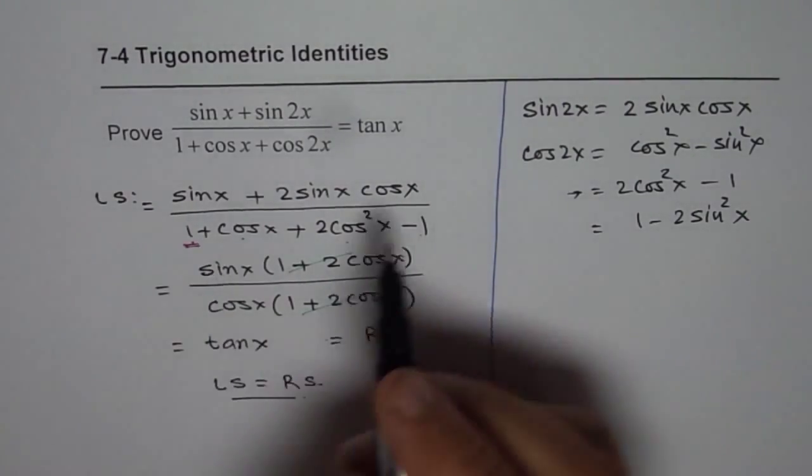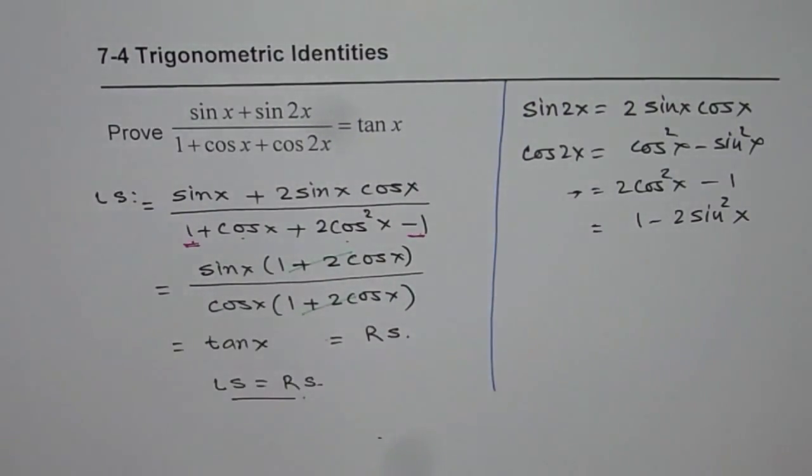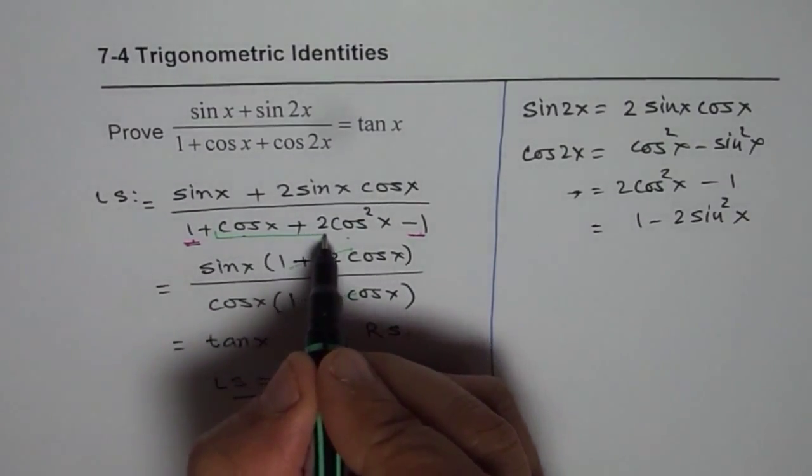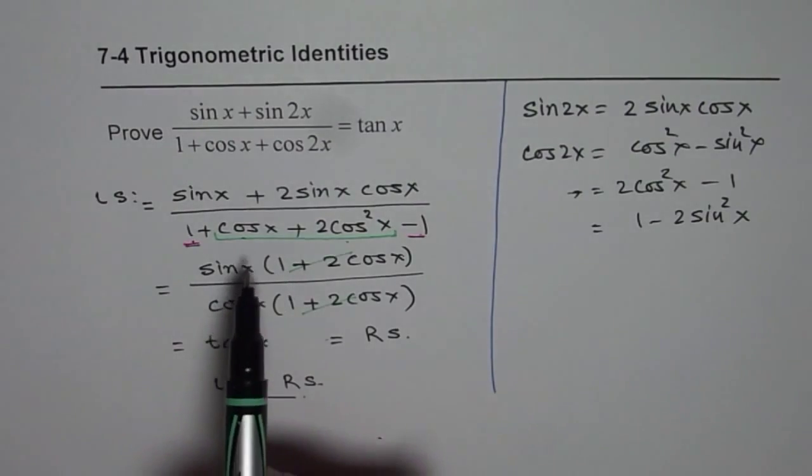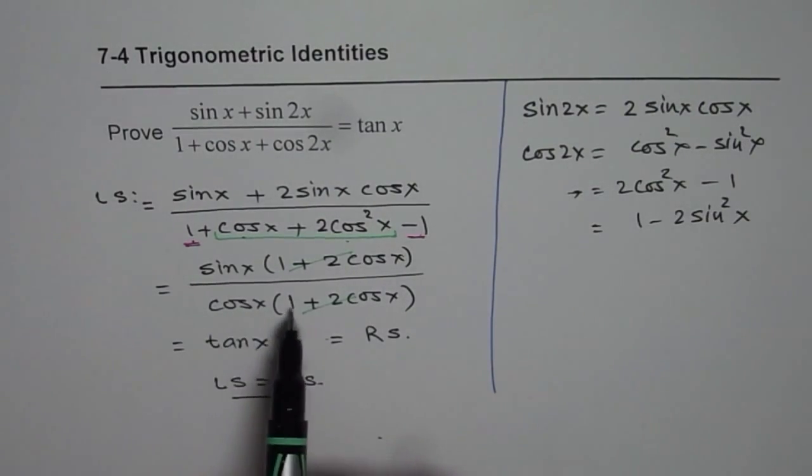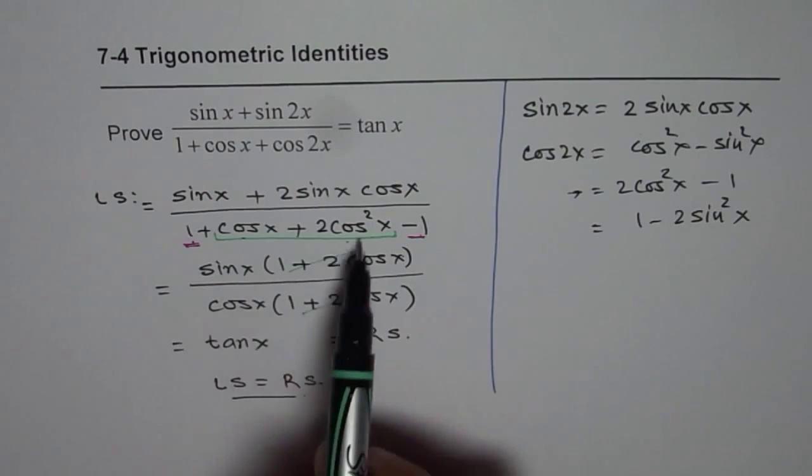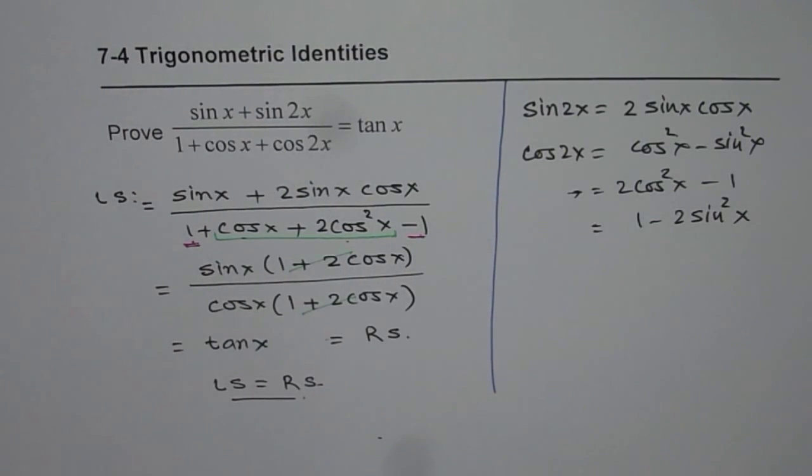So in this step I took 1 and minus 1 is 0. So we were left with just these terms. I skipped one step, that is why I am coming back to it. And we factored cos x, we get 1 plus 2 cos x. So that is how we do it.